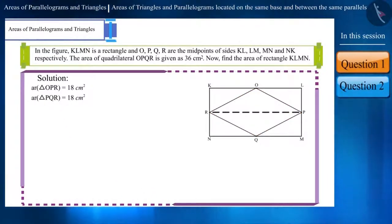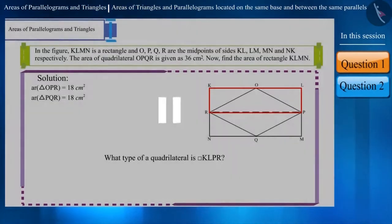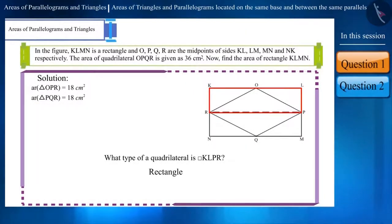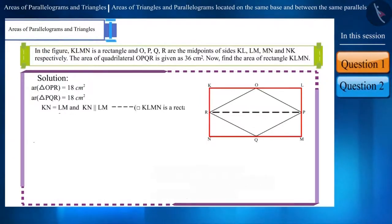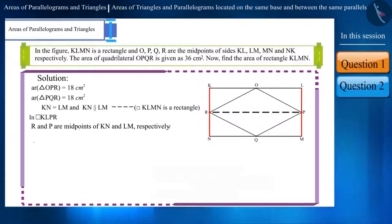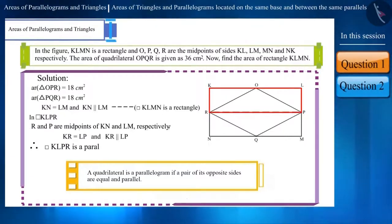Friends, now if we look at quadrilateral KLPR, can you tell what kind of quadrilateral it is? Pause the video and think about it. This will also be a parallelogram. It is given that KN is equal to LM and KN is parallel to LM because quadrilateral KLMN is a rectangle. R and P are the midpoints of KN and LM respectively. Therefore, KR is equal to LP and KR is parallel to LP. In quadrilateral KLPR, a pair of opposite sides is equal and parallel, so we can say that quadrilateral KLPR is a parallelogram.